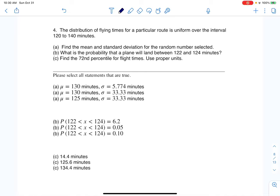Hey everyone, welcome to number four. Let's go ahead and take a look. It says the distribution of flying times for a particular route is uniform, that's a big buzzword, over this interval.